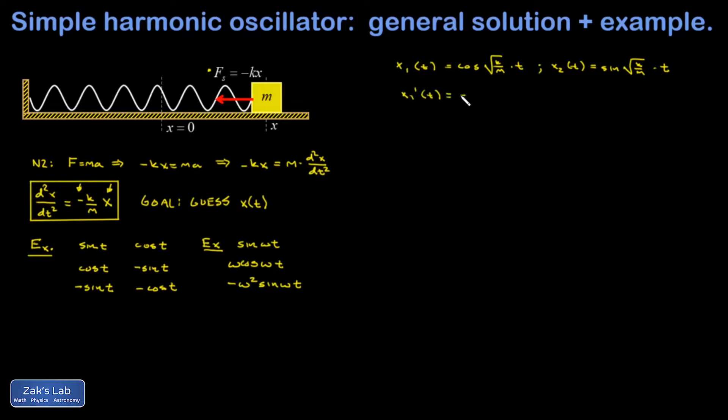If I take x1 prime of t, that gives me a negative because it's a cosine function, a square root of k over m out in front because of the chain rule, and the cosine differentiates to the sine. Then I take the second derivative, and another factor of root k over m comes out because of the chain rule. I multiply those two square roots and just get what's inside, and then the sine differentiates to the cosine. So this is actually negative k over m multiplied by my original position as a function of time, cosine root k over mt, x1 of t. So I have a function of time that is satisfying this differential equation. The equation says differentiate twice, and you get negative k over m out in front of what you started with.